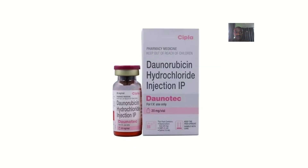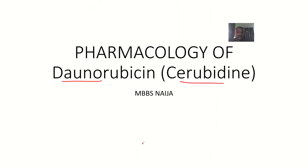Bone marrow suppression shows up as neutropenia, anemia, and thrombocytopenia. Other side effects can include nausea, vomiting, alopecia, and mucositis. That covers the pharmacology of daunorubicin, sold under the brand name cerubidine.